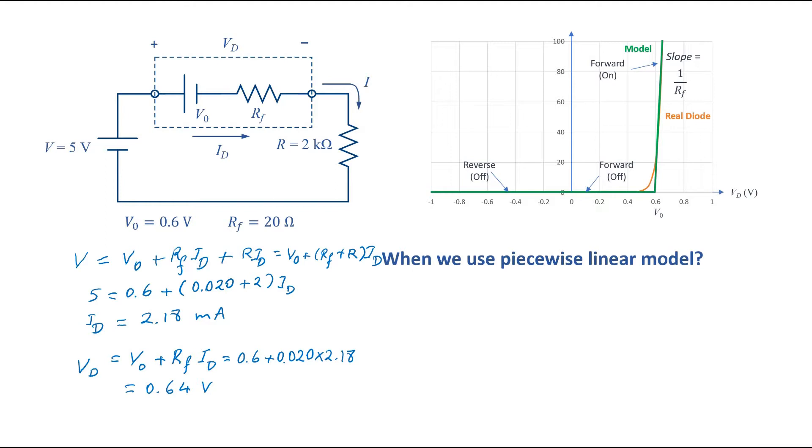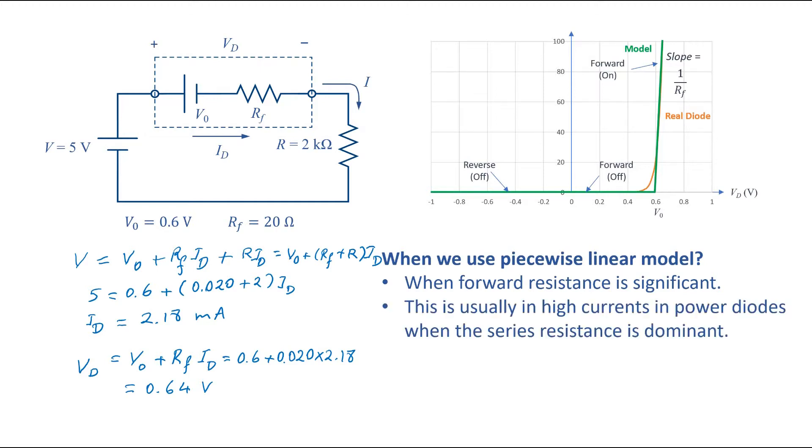We use this model when forward resistance is significant. This is usually in high currents in power diodes when the series resistance is dominant. In low or medium currents forward resistance is negligible and the constant voltage model is adequate.